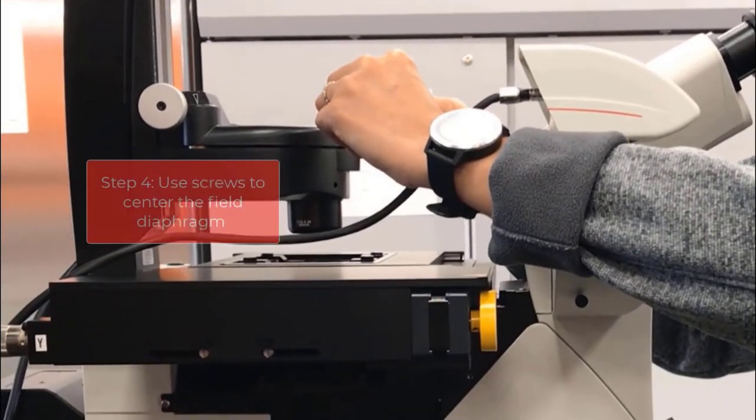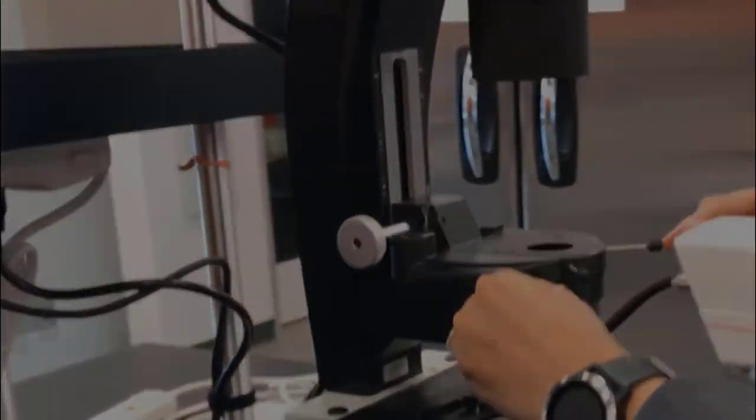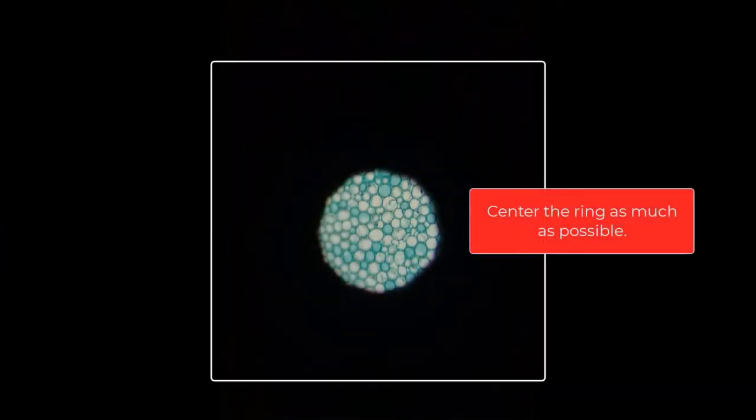slowly rotate them while looking through the eyepieces until you center them in your field of view. It should look something like this where it's roughly centered in your field of view. Try to center the ring as much as possible.